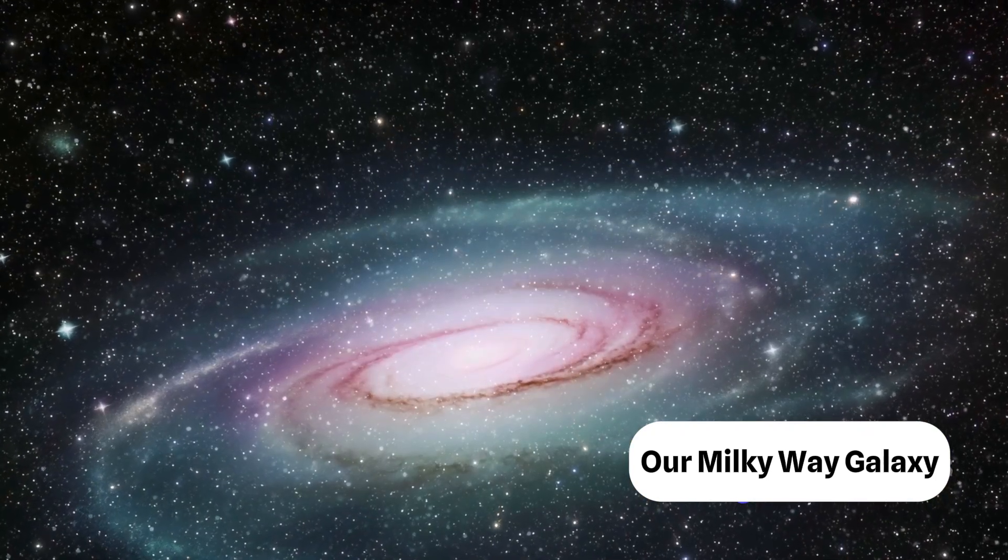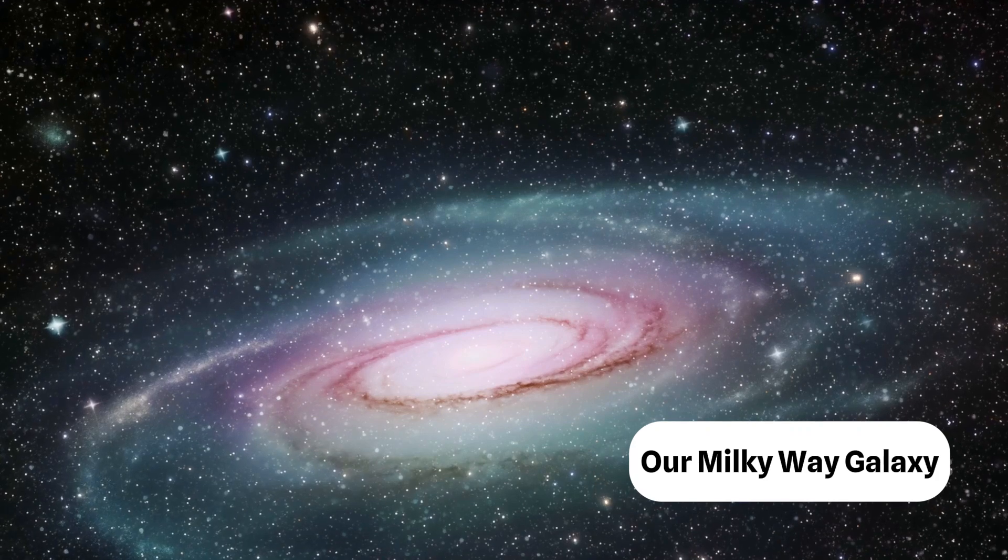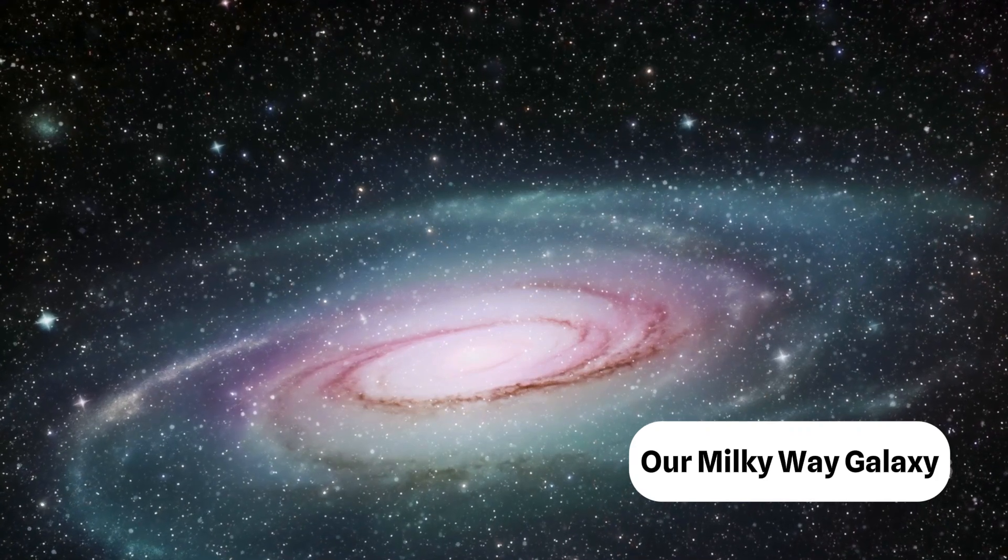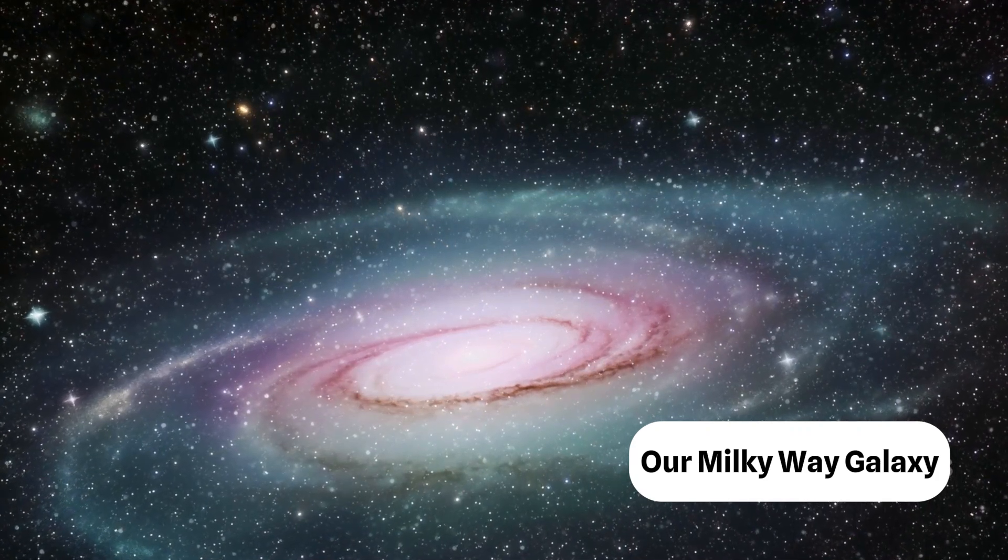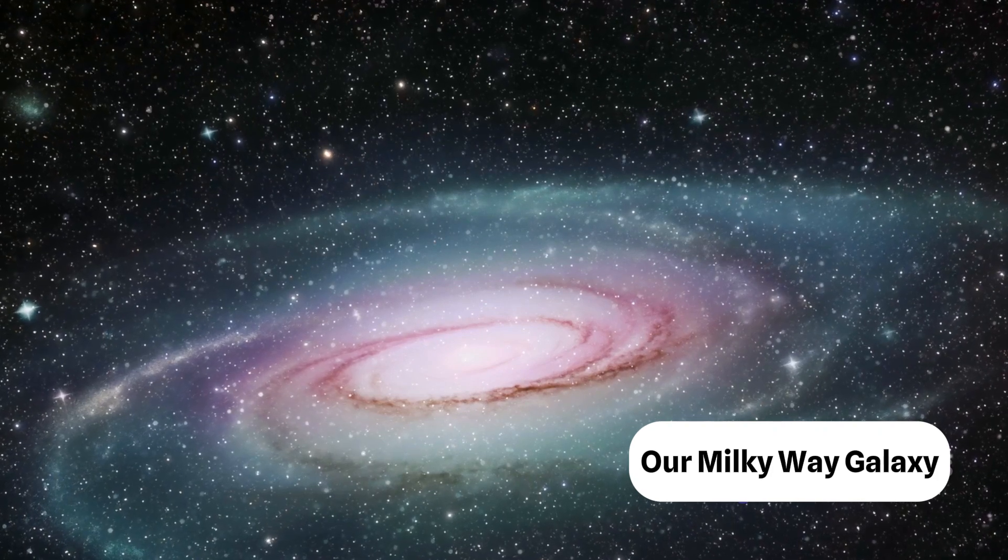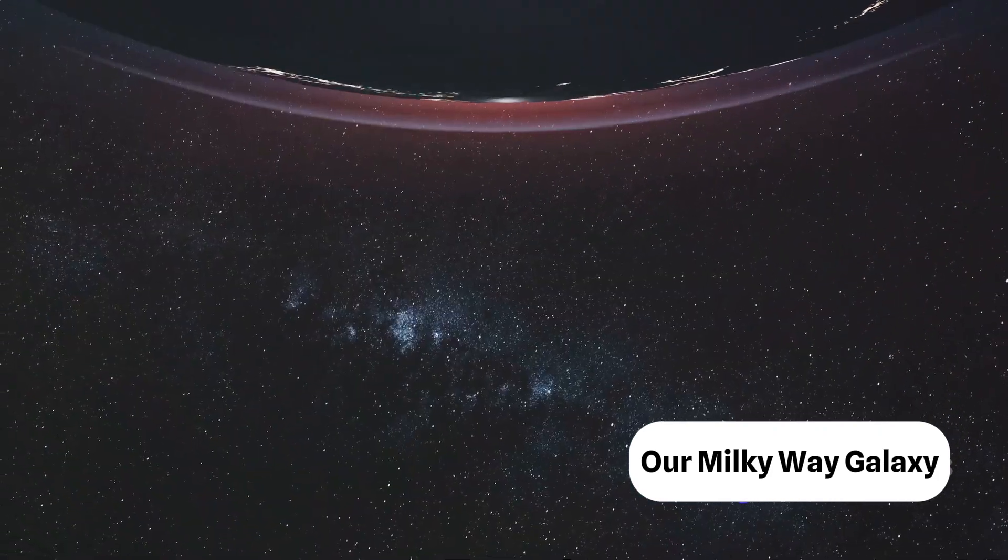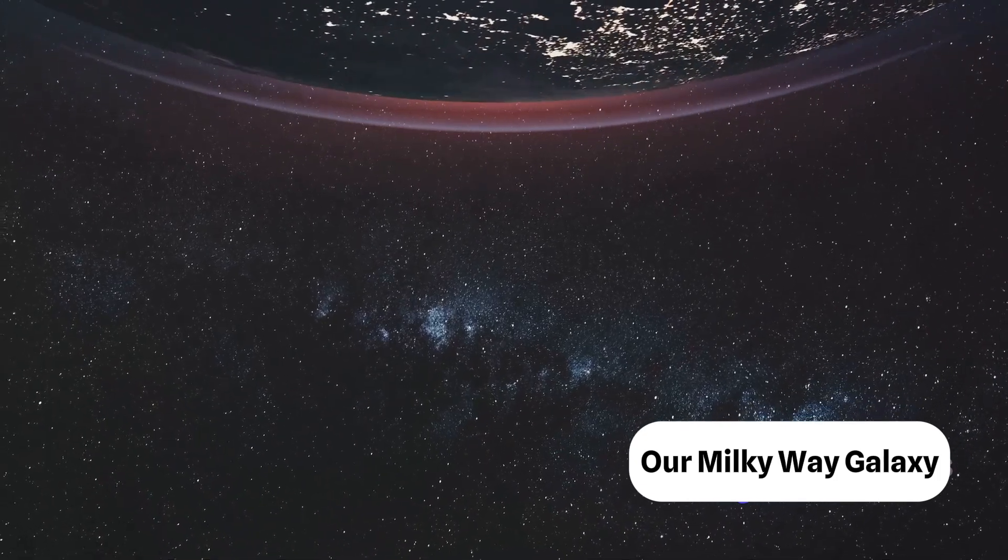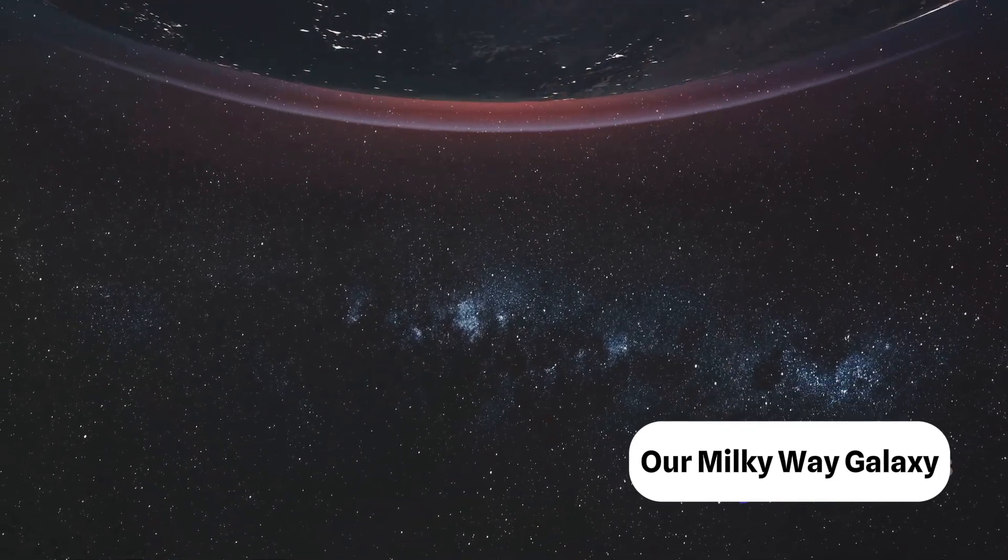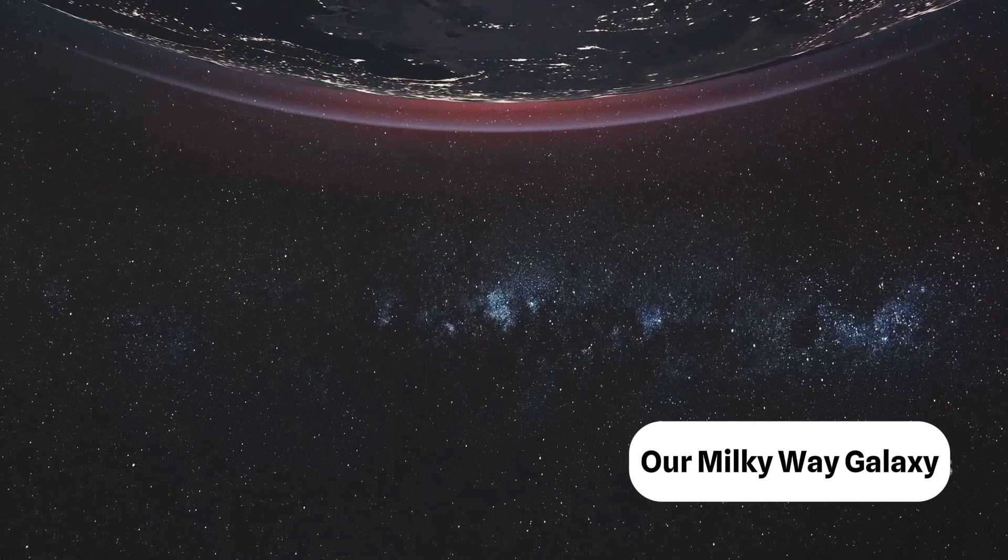Now let's talk about our neighborhood, our little corner of this cosmic city. Our solar system, with its eight planets, countless asteroids and comets, resides within the Orion arm of the Milky Way. Not quite downtown, but not too far out in the suburbs either. We're in a prime spot, about 26,000 light-years away from the galactic center.